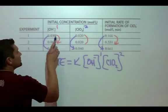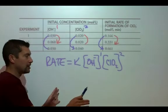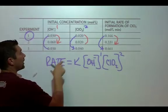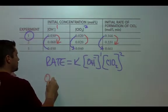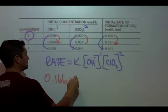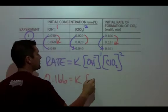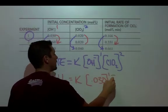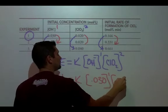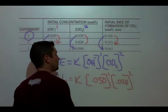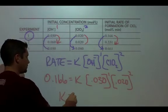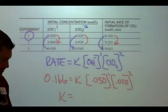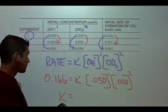So I'm going to take one of these experiments and I'm going to plug in all my numbers. For example, I'll take experiment number one and I'm going to plug in my rate, 0.166. I'm going to plug in hydroxide, and then I'm going to plug in ClO2, and I'm going to solve mathematically for K. And I have actually not done this yet, so let me crank this out real quick.